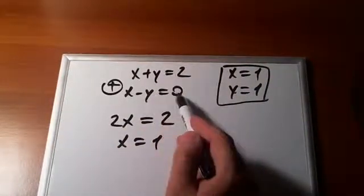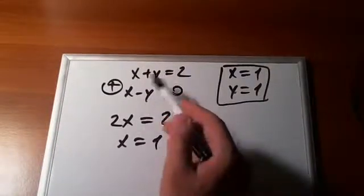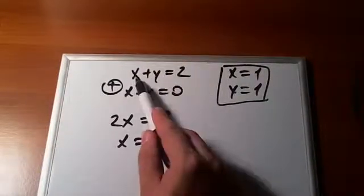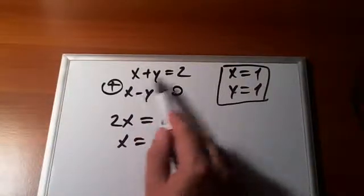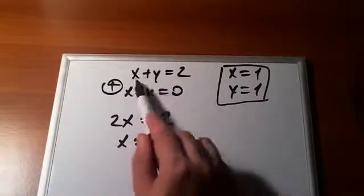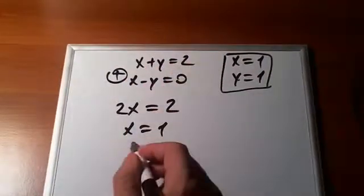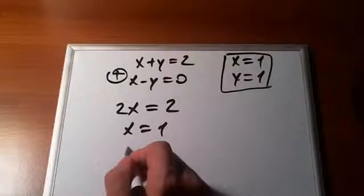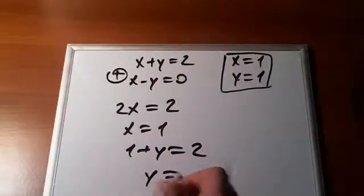We go back here and we can plug it here. We'll say, take from this one. It doesn't matter. We can plug it here. This equation, this equation. Let's just look at equation number 1, where x plus y is equal to 2. But instead of x, we'll write 1. Say 1 plus y is equal to 2. That's why y is equal to 1.